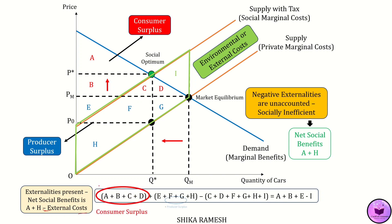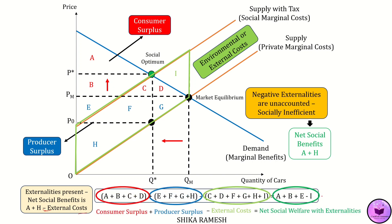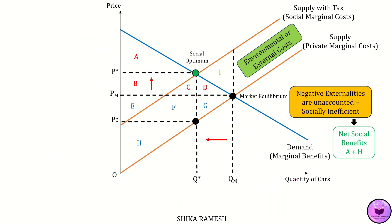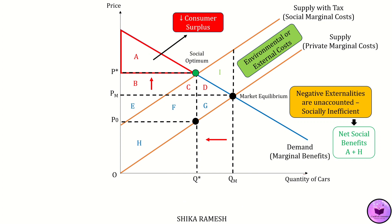Since the Pigovian taxes are imposed, the market price of each automobile has increased to P star. The new consumer surplus is triangle A, which is less than the original consumer surplus A plus B plus C plus D. This shows that taxes have raised the price of automobiles, which has decreased demand and welfare among consumers.